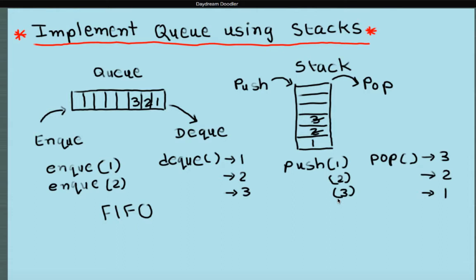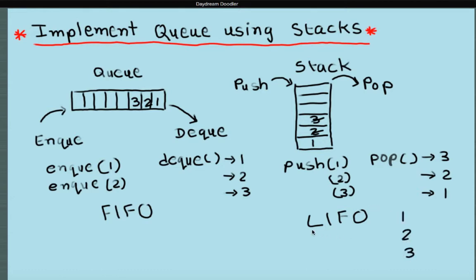Basically the removal order of elements is different. In a stack it's called a LIFO structure — last in, first out. The last element pushed onto the stack was 3 and it's the one that comes out first. This question asks you to implement a queue using stacks. That means you need to use a stack but when you remove elements instead of getting 3, 2, 1 you should get 1, 2, 3. So instead of LIFO you need to make it a FIFO structure. Let's see how you can do that using stacks.